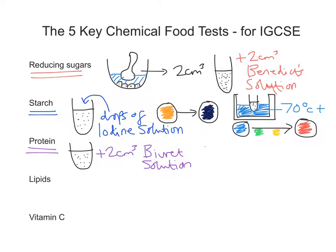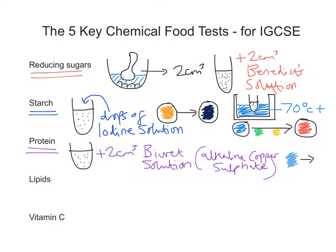Biuret solution is actually alkaline copper sodium. Typically when doing this practical in school you'll get a ready-made Biuret solution given to you. We're looking for a colour change from a light blue colour into a very noticeable change to purple — a purple lilac colour. That is a positive indication that protein is present. So all the tests we're referring to today are about colour changes; here we're looking for blue to purple to indicate that positive result.